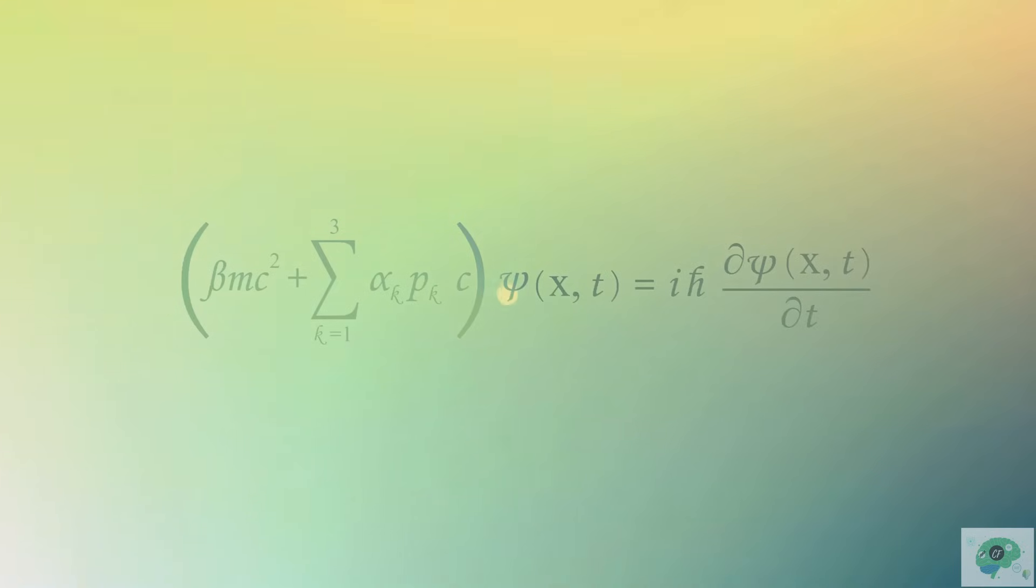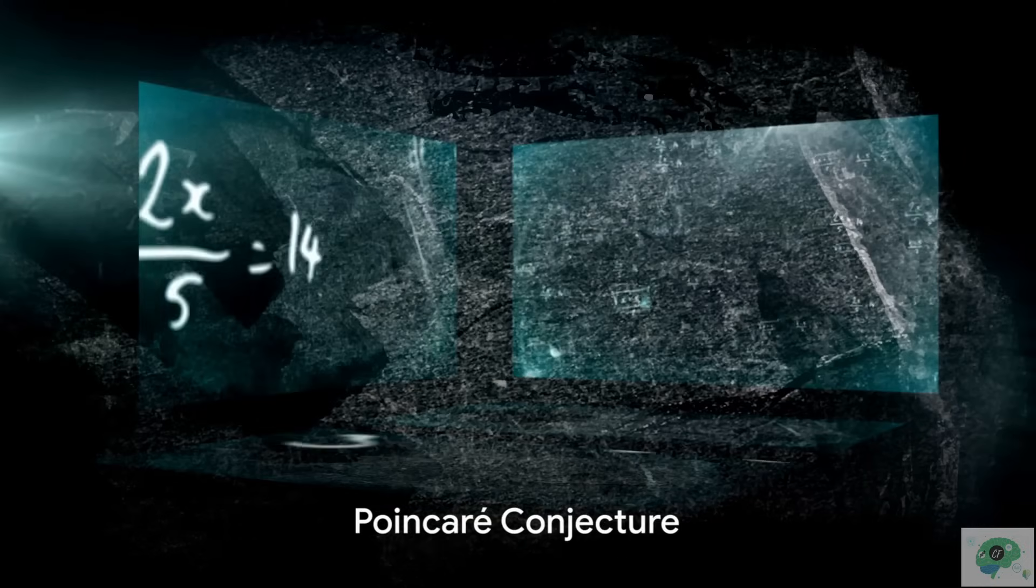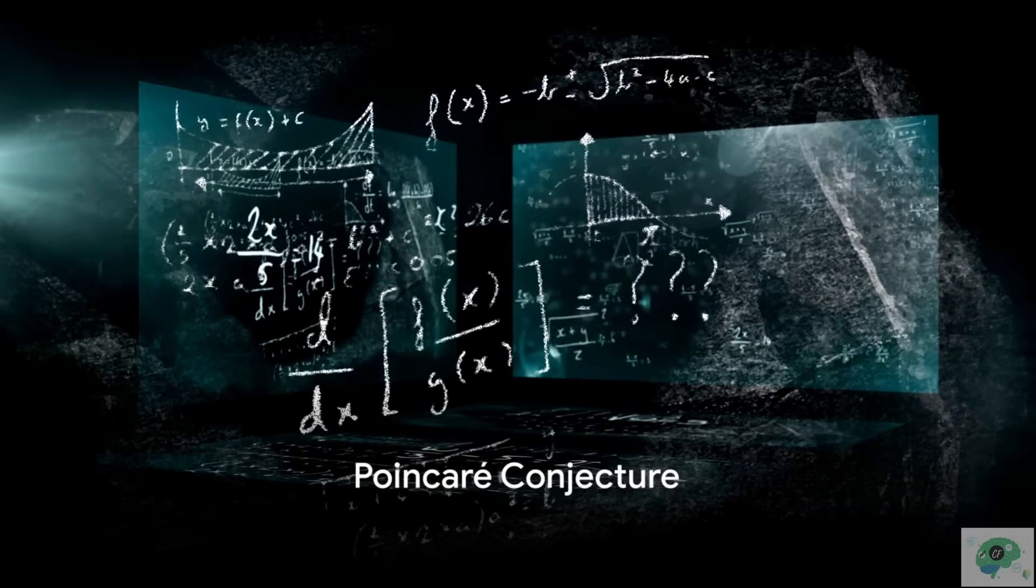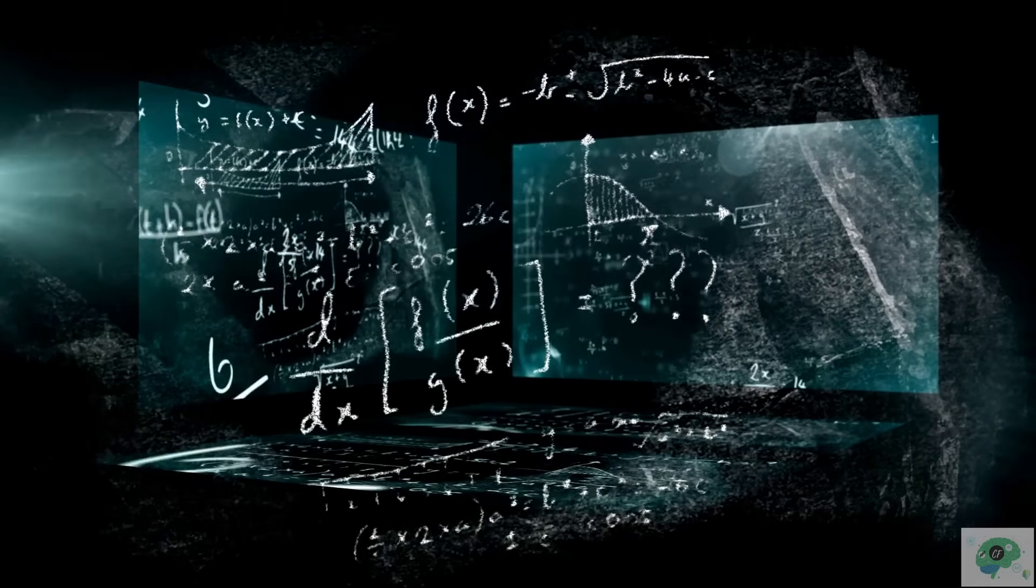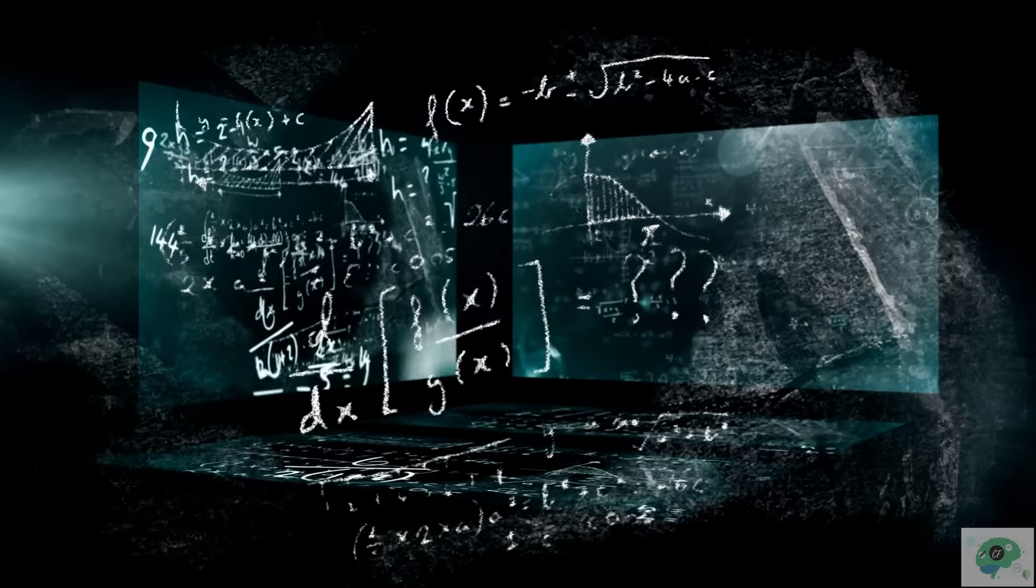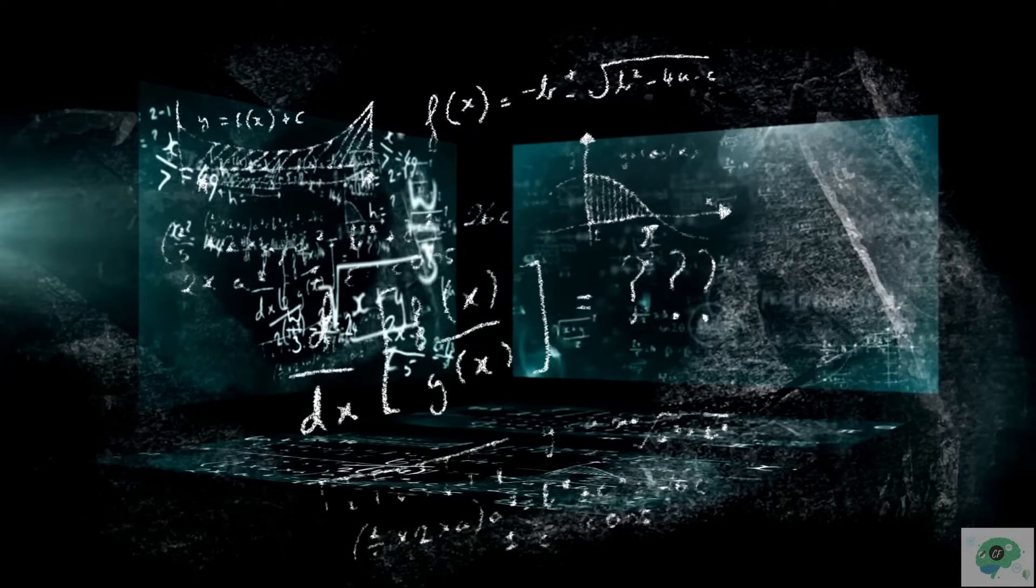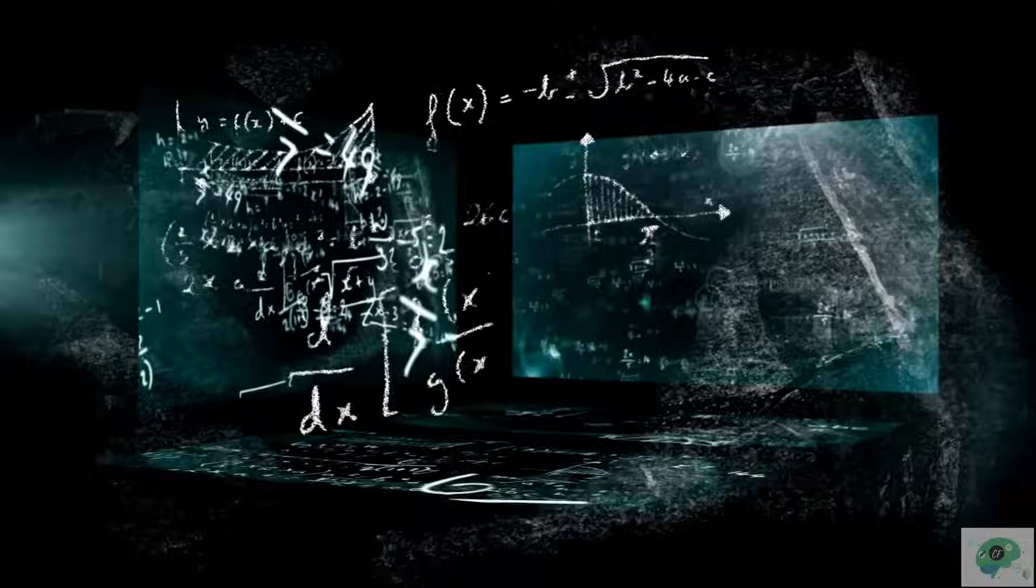And finally, we come to the one problem that has been solved, the Poincaré conjecture. In a world of unsolved mysteries, the Poincaré conjecture stands as a beacon of achievement. This problem, proposed by French mathematician Henri Poincaré in 1900, involves a concept called topology.